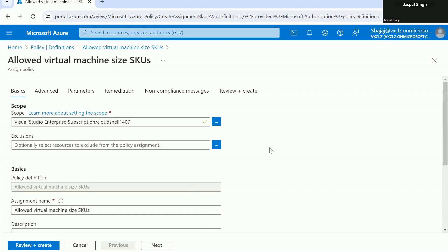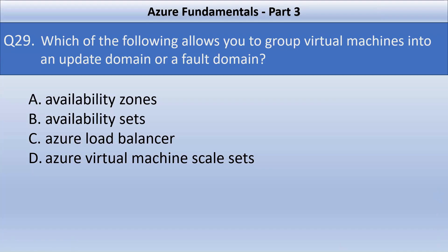Let's head back to the questions. Question number 29: which of the following allows you to group virtual machines into an update domain or a fault domain? Your options are availability zones, availability sets, Azure load balancer, or Azure virtual machine scale sets. The correct answer is option B, availability sets. Availability sets are logical groupings of VMs that reduce the chance of correlated failures. Each VM in the availability set is assigned an update domain and a fault domain by the underlying Azure platform. Each availability set can be configured with up to three fault domains and 20 update domains. Make a note of these limits as they can form questions in the Azure Fundamentals exam.